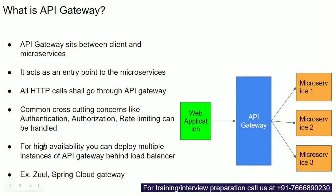For high availability, you can deploy multiple instances of the API gateway behind a load balancer. A single instance of the API gateway can go down, so running multiple instances behind a load balancer ensures it remains available. Frameworks available for implementing this pattern include Zuul and Spring Cloud Gateway. Zuul is the older one, but Spring Cloud Gateway is the newer, recommended option for new projects.